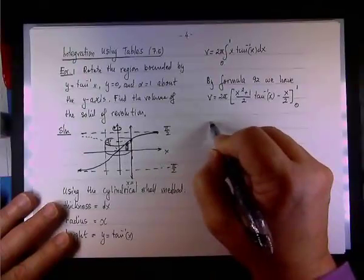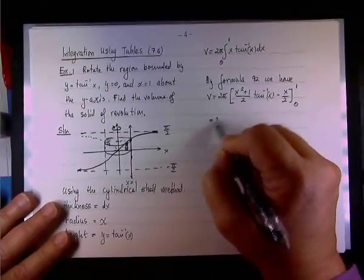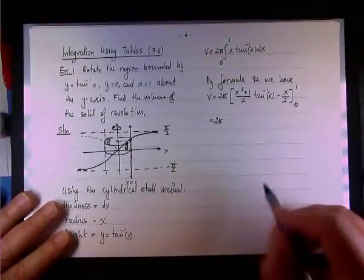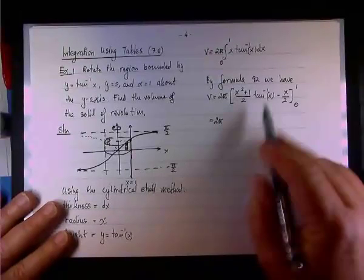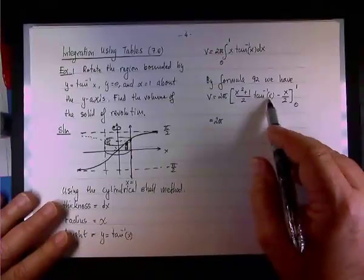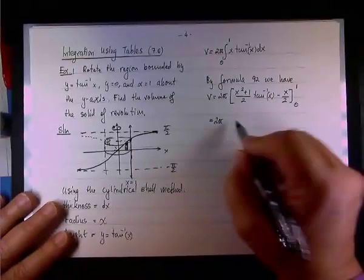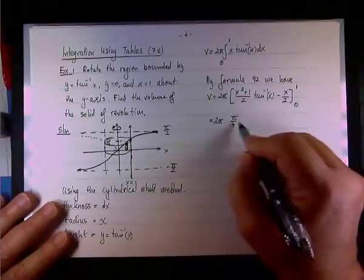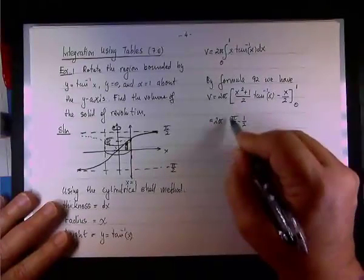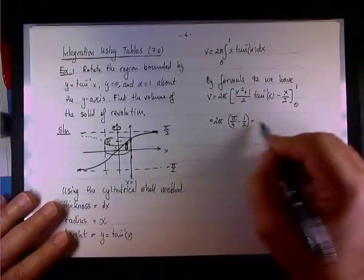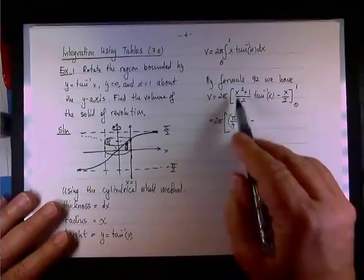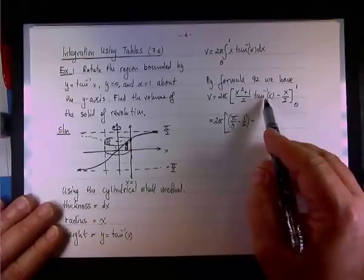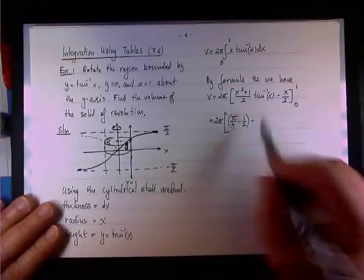And we need to evaluate from 0 to 1. Don't forget we are dealing with a definite integral right now. So plug 1 and plug 0 and see what happens. We have 2 pi multiplying everything. So we have 2 over 2, that's 1, and the inverse tangent of 1 is pi over 4. So we have pi over 4 minus 1 half.